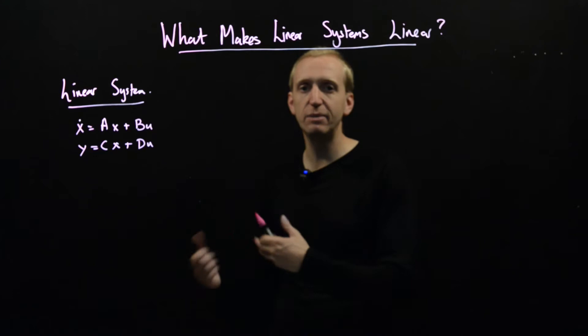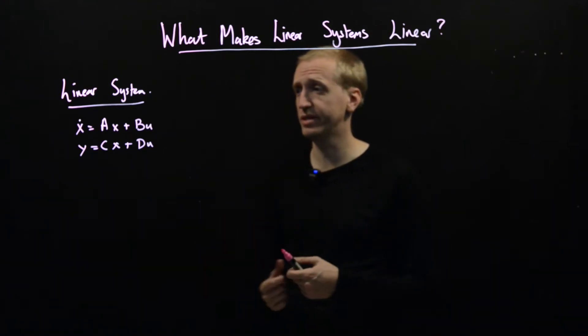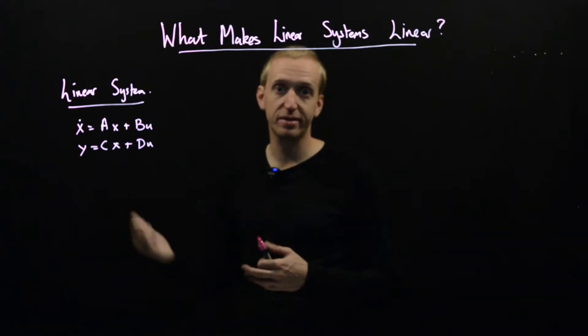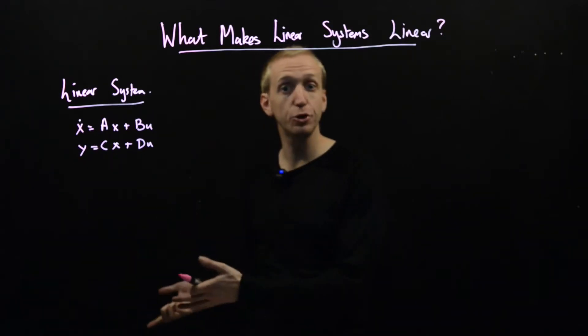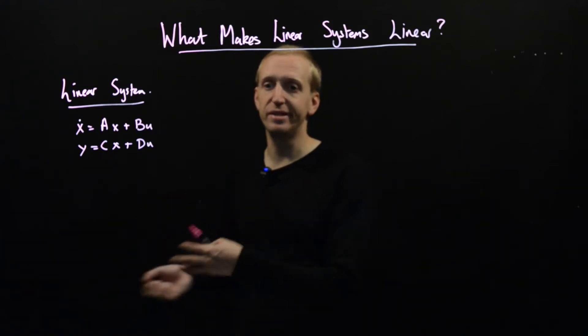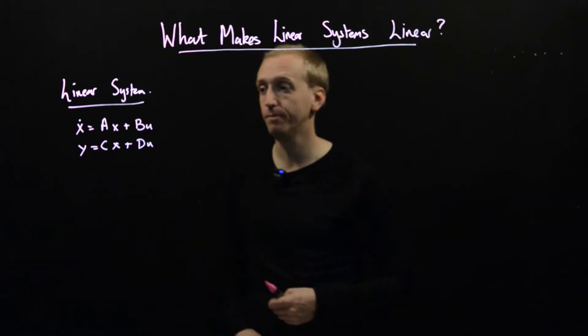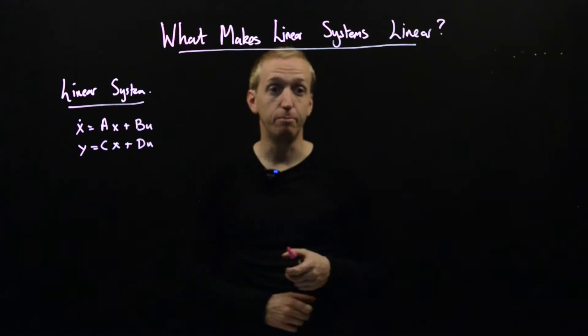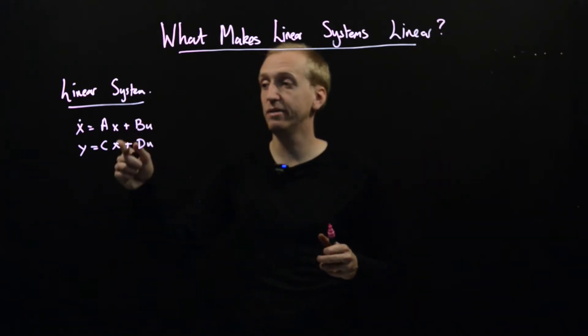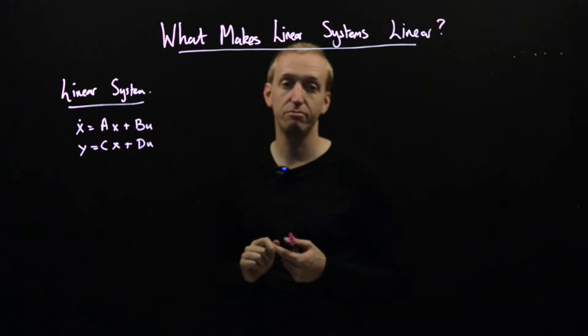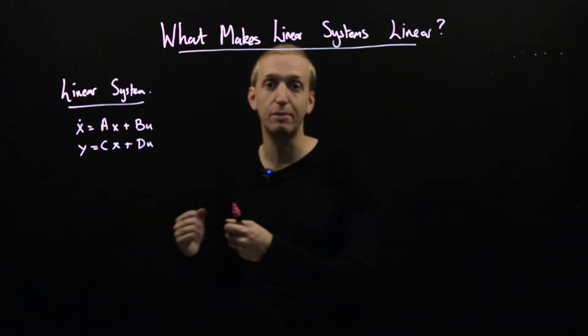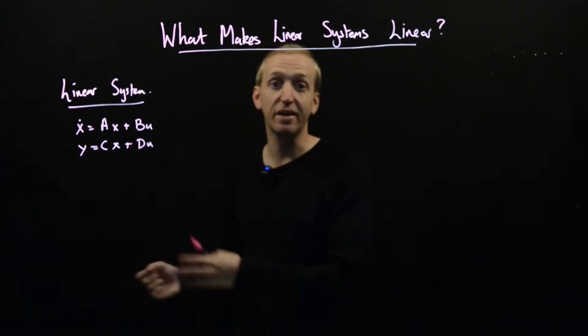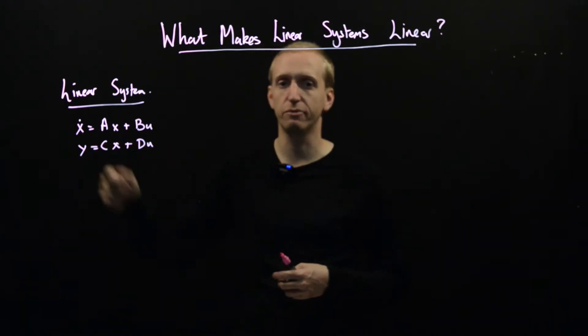The state is a minimal description of the configuration of the system. Y is some vector of outputs of interest, things that you can measure about your system or things you're interested in keeping an eye on. If you had a very large building, you might need a very large state vector x, but you might only be interested in the temperatures in the room. Those temperatures will be some of the states, but there'll be many other states as well. So Y gives you a reduced description.